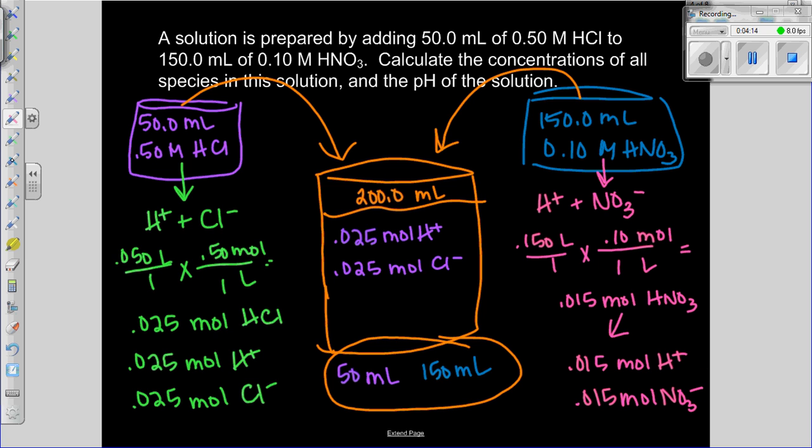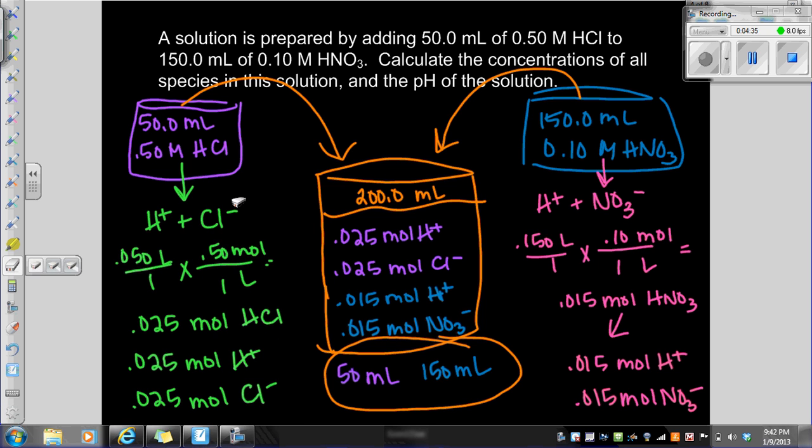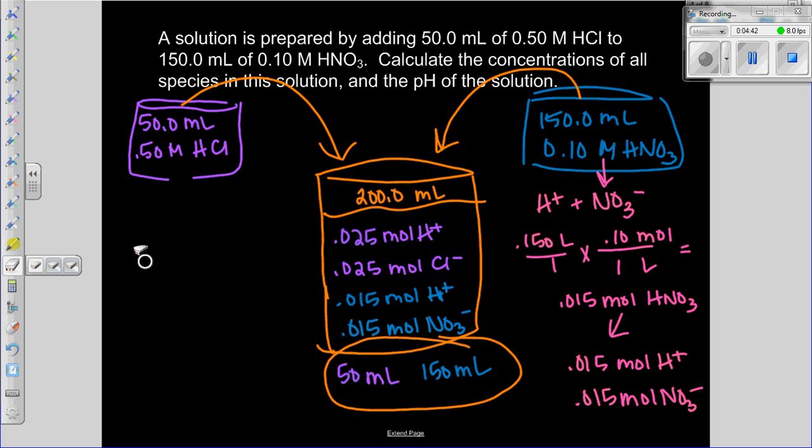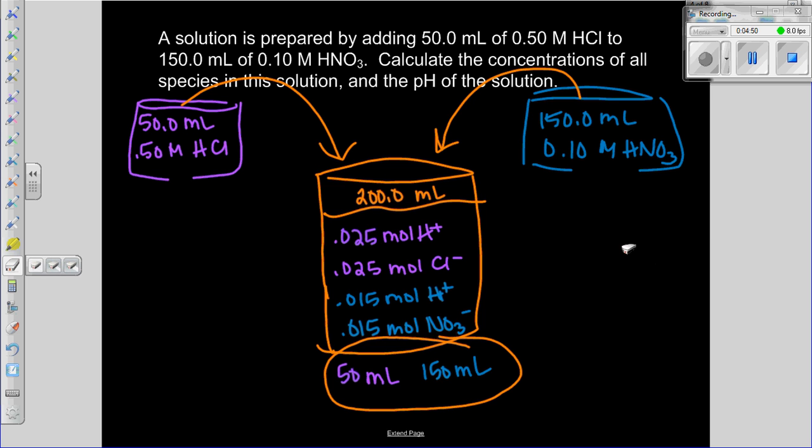I'm going to add that to our new mixture: 0.015 moles of H plus and 0.015 moles of nitrate. Now I'm going to get rid of this original math work because we don't need to look at that right now. I've taken that and included it in the solution.